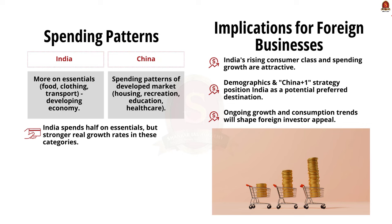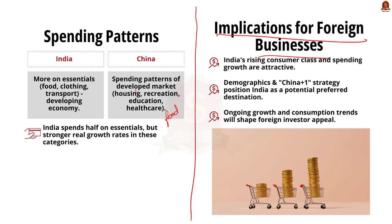India is spending more on essentials like food, clothing, and transportation — typical of developing countries. China shows spending patterns of a more developed market with declining percentages on food and increasing shares on housing, recreation, education, and healthcare. India spends about half of what China does on food, transport, and clothing but shows stronger real growth rates in these categories. India's rising consumer class and the China-plus-one strategy push India as a potential preferred destination for foreign businesses, though it remains uncertain if India will fully eclipse China in appeal for foreign investors.